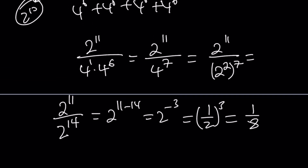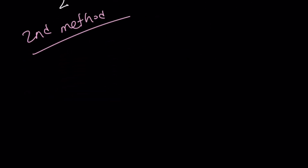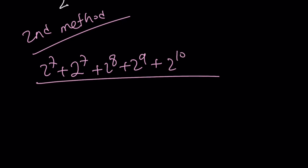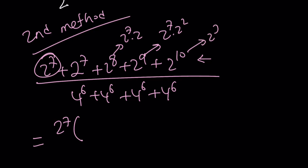So that's one way to approach this problem. Let's look at the second method. Let's write the original problem first: 2 to the 7th plus 2 to the 7th plus 2 to the 8th plus 2 to the 9th plus 2 to the 10th, divided by 4 to the 6, four times. The second method relies on finding a common factor. Looking at the numerator first, 2 to the 7th is the smallest power, so it makes sense to factor out 2 to the 7. Note that 2 to the 8th is 2 to the 7 times 2, 2 to the 9th is 2 to the 7 times 2 squared, and 2 to the 10th is 2 to the 7 times 2 to the 3rd. So factoring out 2 to the 7 gives us 1 plus 1 plus 2 plus 2 squared plus 2 cubed.